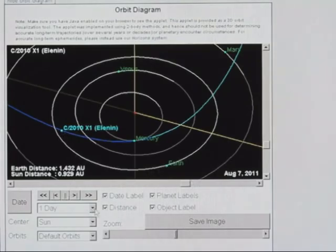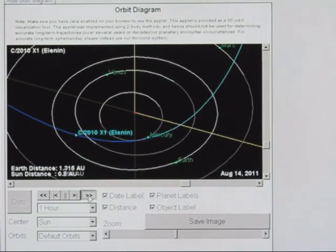Here we are on August 7th, and I'm going to step through an hour at a time and just let it play. More than that, I'm going to step it a day at a time just to get it close. So here we are by August 19th, it's inside the orbit of Venus.